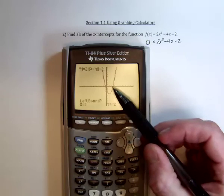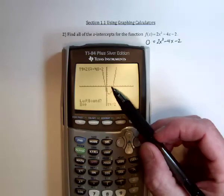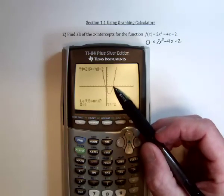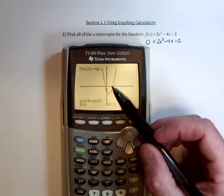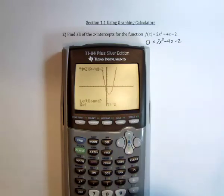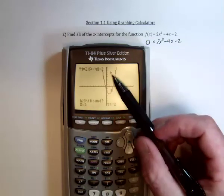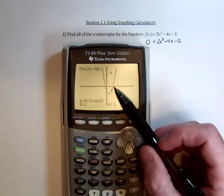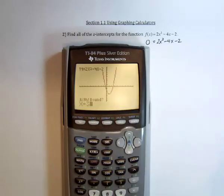Now what we need to do is pick a value just a little bit to the left, pick a value a little bit to the right, and then a guess. So a little bit to the left would be this 2, so just type in a 2, and enter. It puts a marker on the screen saying, okay, I'm going to look from there over. Now pick something on the right, say 3, and enter.